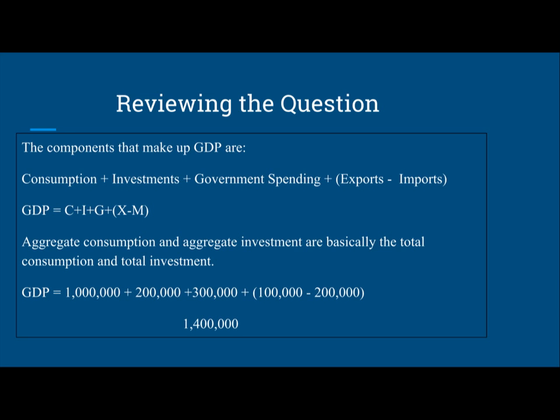Aggregate consumption and aggregate investment are basically the total consumption and total investment. GDP equals $1,000,000 plus $200,000 plus $300,000 plus ($100,000 minus $200,000), which gives $1,400,000.